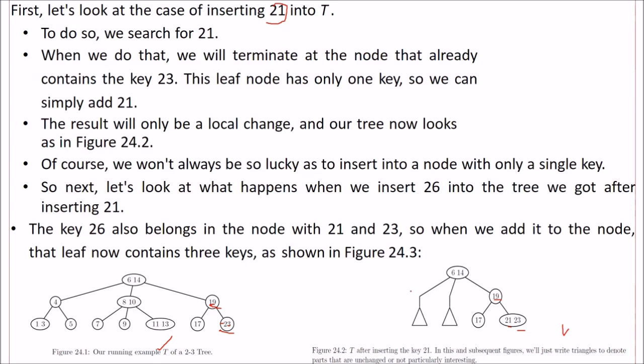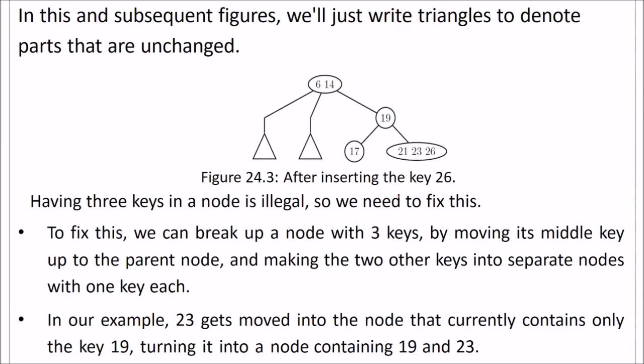Now let us look at what happens when we insert 26 into the tree we got after inserting 21. The key 26 also belongs in the node with 21 and 23, so when we add it to the node, that leaf now contains three keys: 21, 23, and 26. Having three keys is illegal, it's not allowed here, so we are going to fix it.